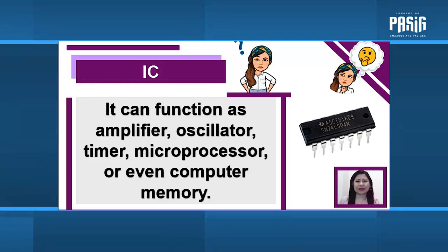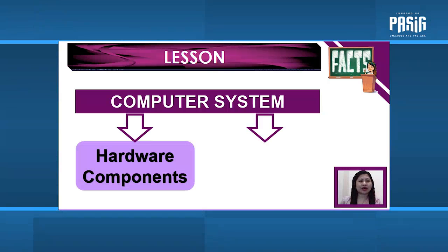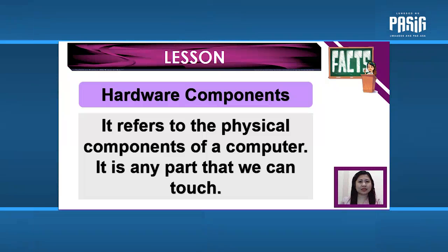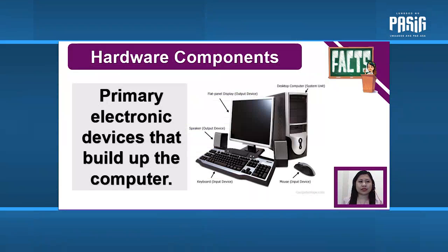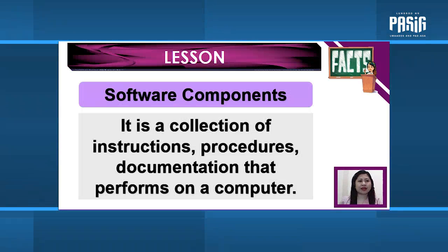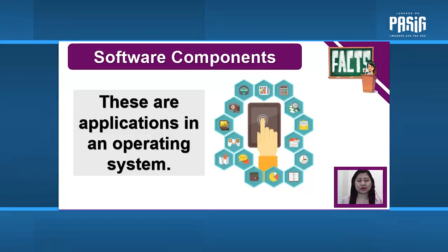Now let us study the computer system. A computer system has two main components: hardware components and software components. Hardware components are physical components of a computer — any part that we can touch. These are electronic devices that build up the computer. Examples are the system unit, monitor, mouse, keyboard, speaker, printer, projector, and scanner. Software components are a collection of instructions, procedures, and documentation that perform tasks on a computer. These are applications and operating systems — any program that you use. Examples are MS Excel, MS Word, PowerPoint, database, Photoshop, Google Chrome, and a lot more.